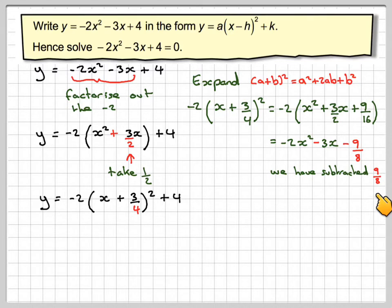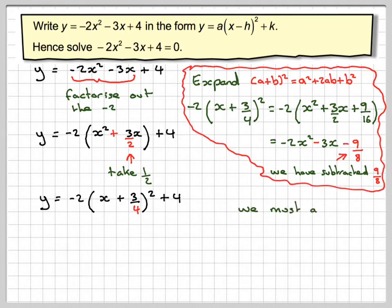So if we subtracted 9 over 8 over here we have to add 9 over 8. Another way to work out what this is because this is an important thing is just to do 3 squared which is 9, 4 squared which is 16 and then just multiply it by minus 2 and that will give you that number directly. But by doing this also you can check because these two terms should be the same as the first two terms up here.